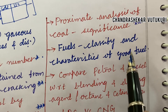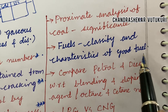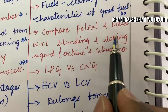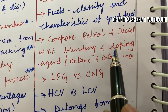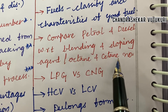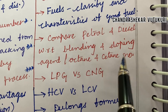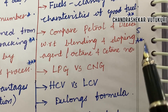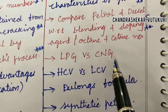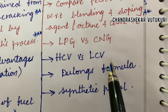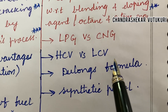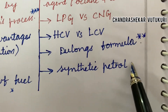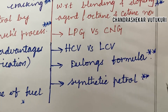Classify fuels and the characteristics of a good fuel. Compare petrol and diesel with respect to octane and cetane number. Learn about blending and doping agents, which may also be a topmost question. LPG versus CNG differences, HCV versus LCV, and Dulong's formula may also be short questions. Synthetic petrol may also be a short question.